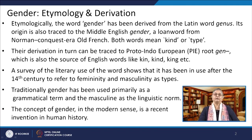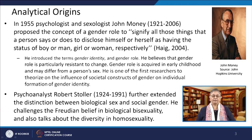A survey of the literary use of this word shows that it has been in use after the 14th century to refer to femininity and masculinity as sex types. Traditionally, gender has been used as a grammatical term. The concept of gender in the modern sense is a very recent invention in human history. Although the term gender as a synonym for sex has a history going back to the early 15th century, prior to the 1960s it was rarely used in non-grammatical contexts.